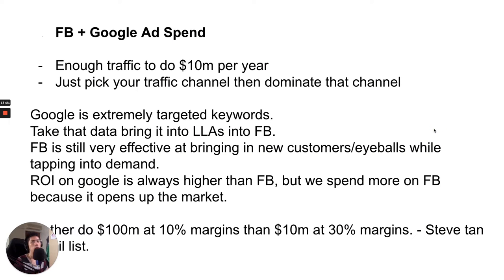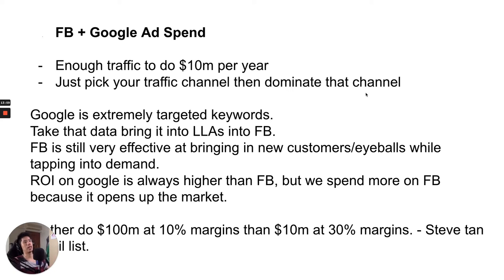Facebook and Google are multi-billion dollar companies with enough traffic for anybody to do at least 10 million dollars per year. A lot of the time people try to find new ad platforms, but the best platform is where your customers are hanging out — nobody cares what platform it is as long as you can get an ROI. Pick your traffic channel and dominate it. It takes at least six months to understand what works on a platform, then another six months to scale it up. Most people don't consistently advertise enough to be recognized in that channel.